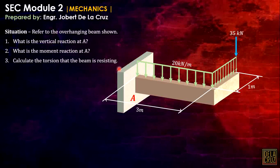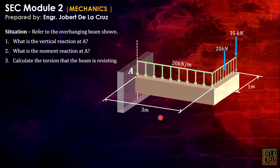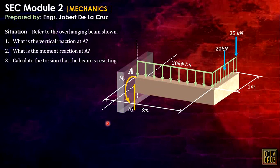Calculate the vertical reaction at A, the moment reaction at A, and also the torsion that the beam is resisting. Drawing the free body diagram: the vertical reaction at A, and the moment reaction at A due to bending about the bending axis. The torsion that the beam is resisting is the moment along the longitudinal axis of this beam.